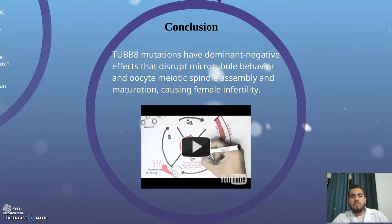In conclusion, TUBB8 mutations have dominant negative effects that disrupt the cortical behavior and oocyte meiotic spindle assembly and maturation, causing female infertility.